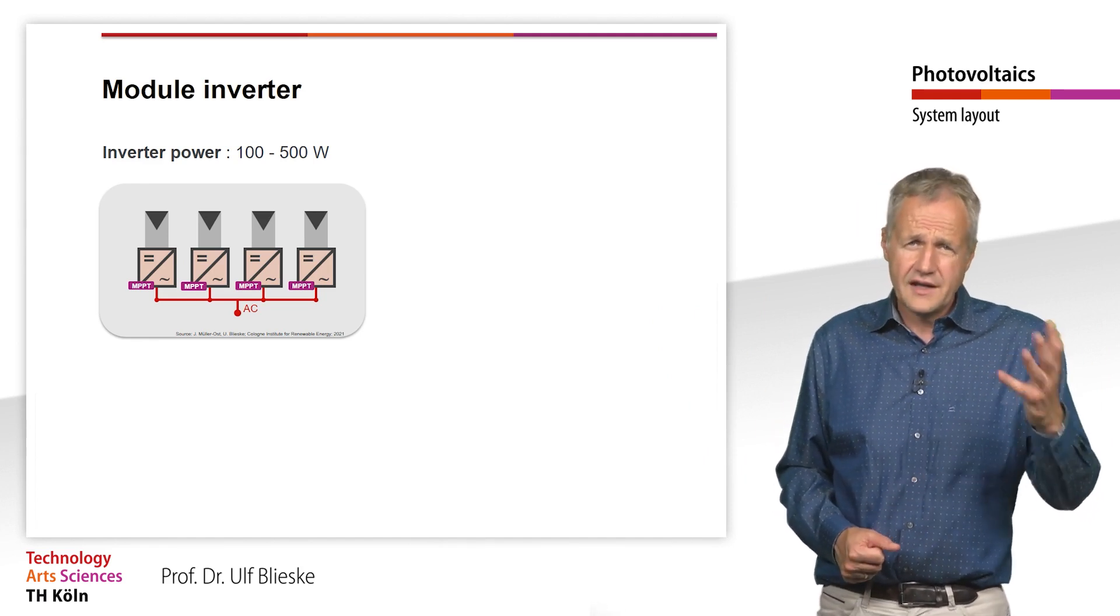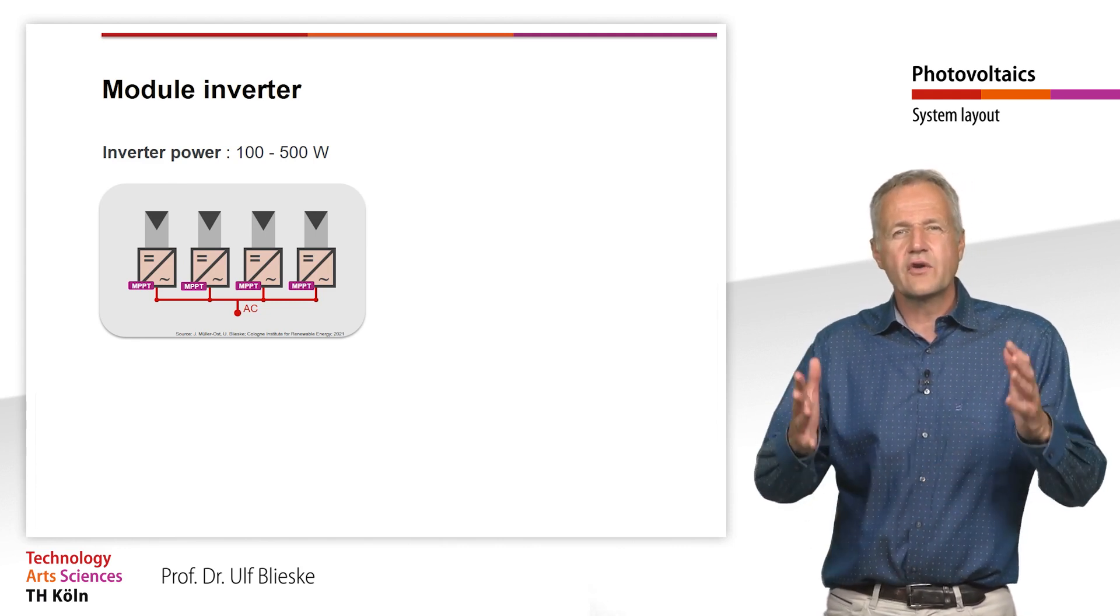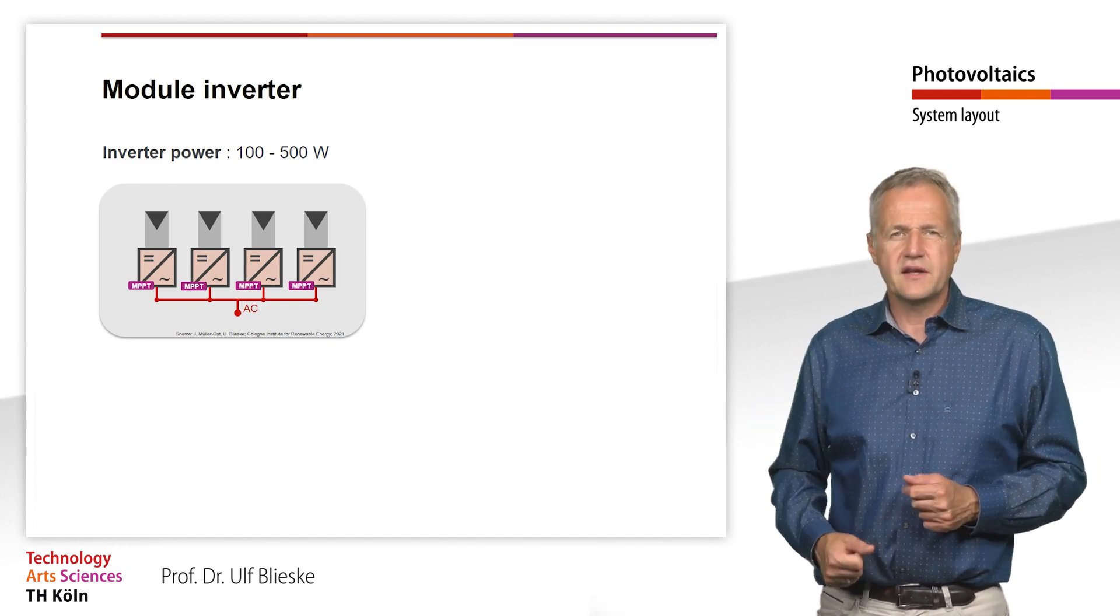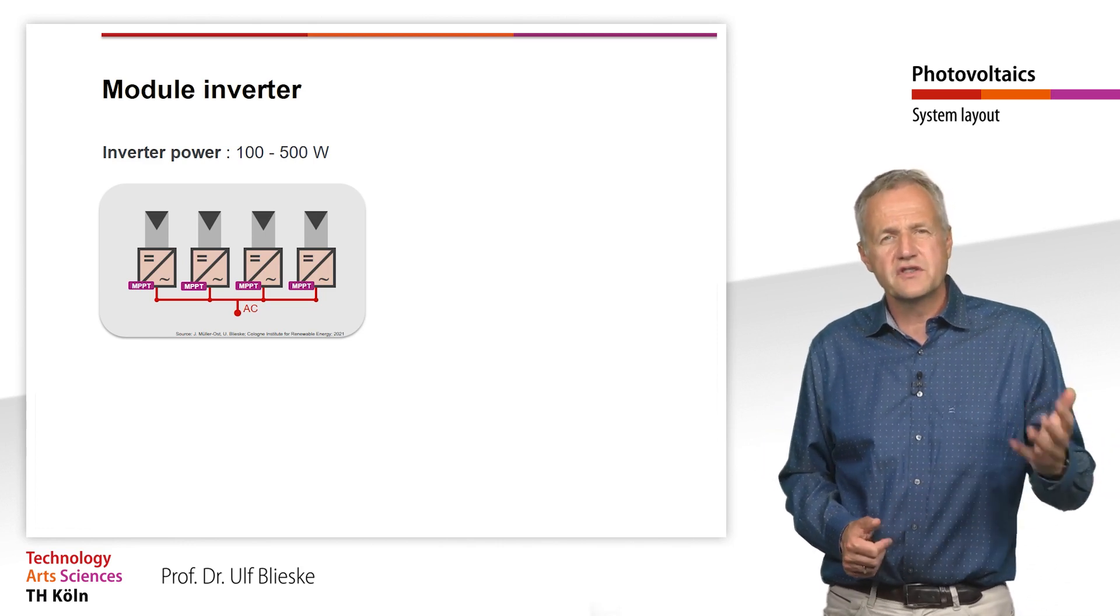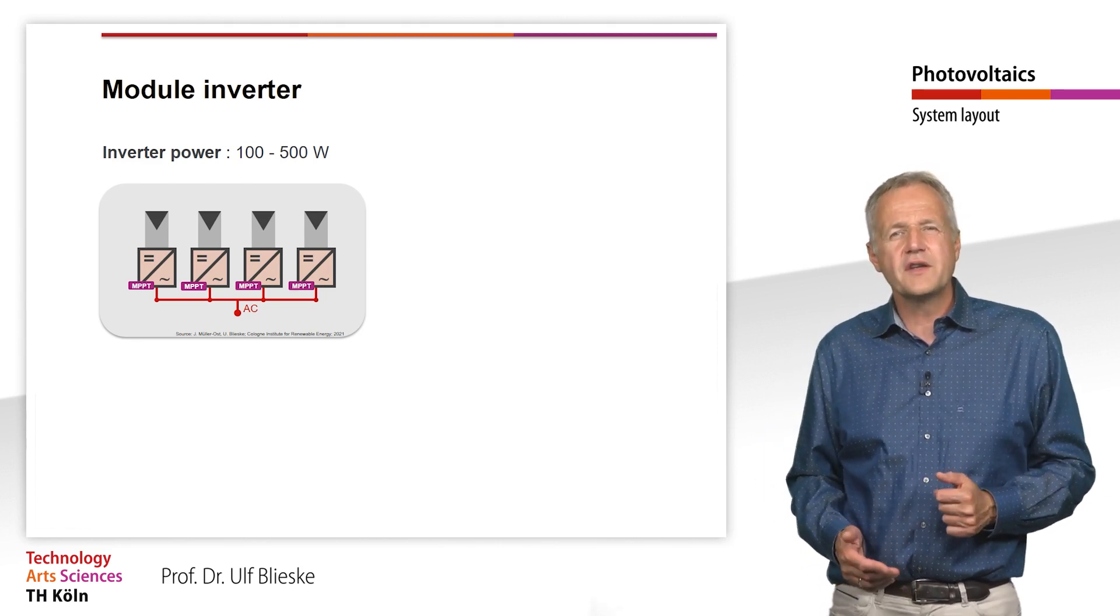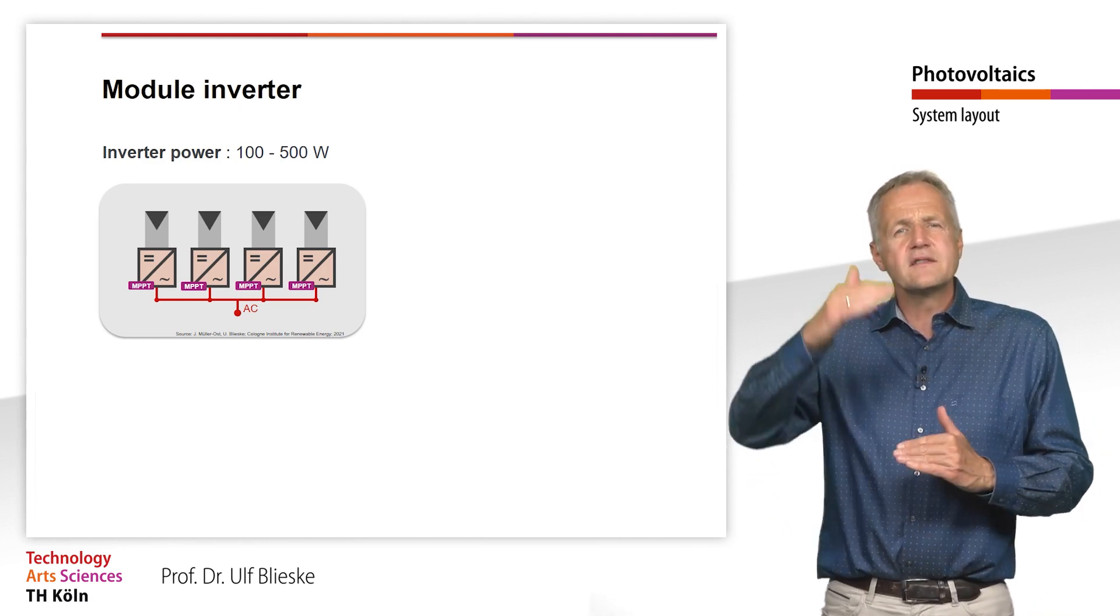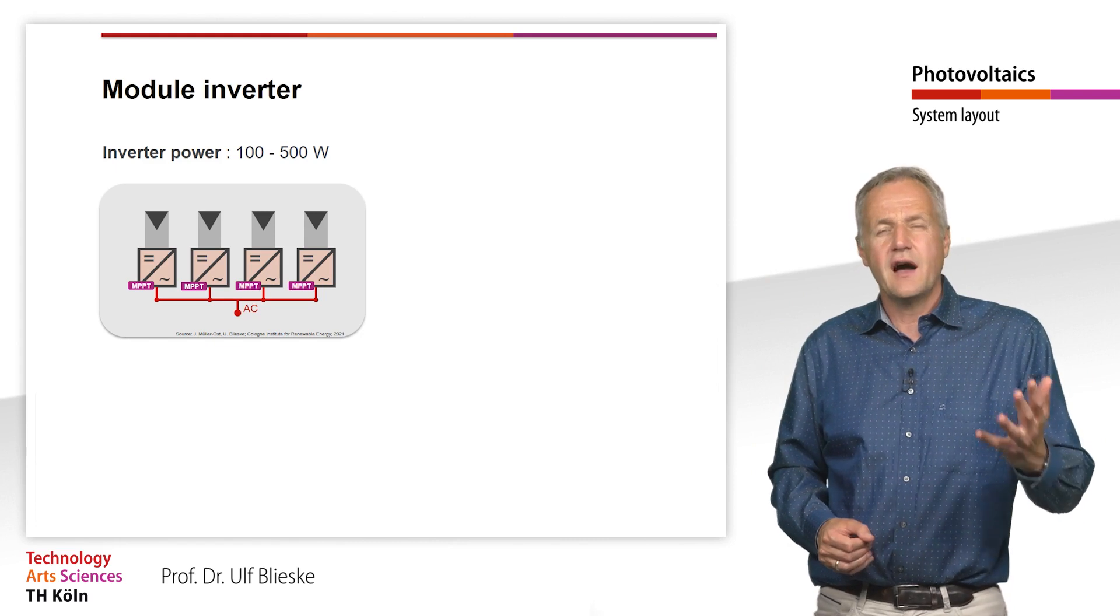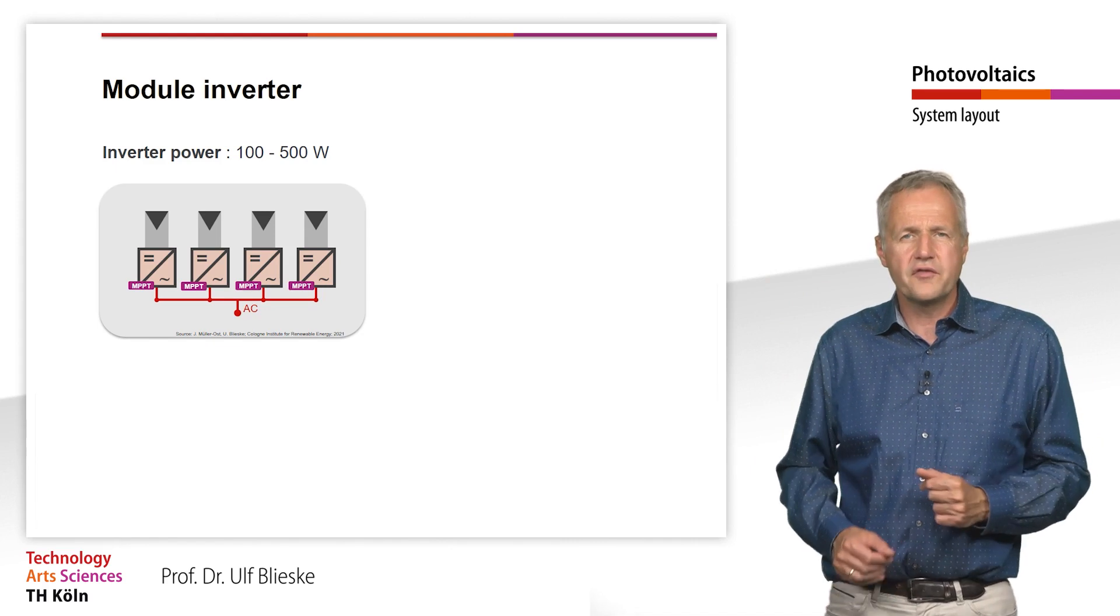With a string inverter, on the other hand, replacement is comparatively simple, since it is usually located at an easily accessible place and only one inverter needs to be replaced. Another disadvantage results from the low voltage of a single PV module, which is typically around 34-40V. Module inverters are therefore always two-stage devices with boost converters. Due to the immense difference between input and output voltage, the losses in the boost converter are comparatively high, which leads to a somewhat lower overall efficiency of the inverter.